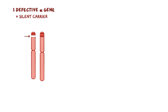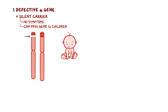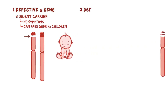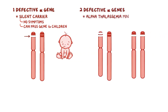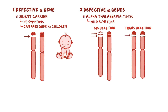If a person has one defective alpha gene, they're called a silent carrier, because they don't have symptoms but they can still pass the gene onto their children. If a person has two defective alpha genes, the person has alpha-thalassemia minor, which causes mild symptoms. This can either be caused by a cis-deletion, where mutated genes are on the same chromosome, or a trans-deletion, when the mutated genes are on two different chromosomes. Cis-deletion variants are more prevalent in Asian populations, whereas trans-deletion variants are more prevalent in African populations.